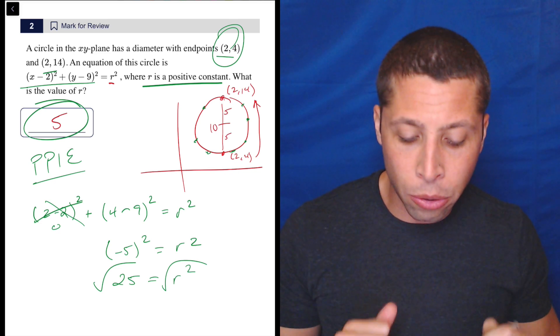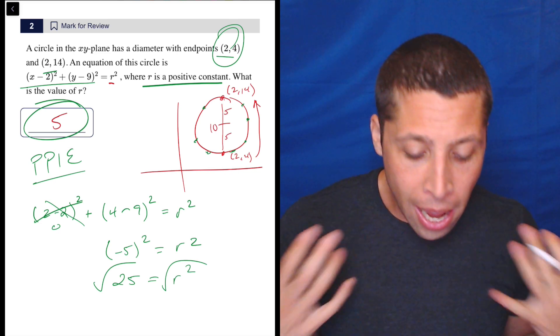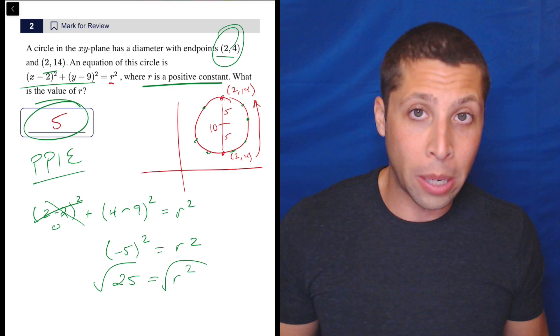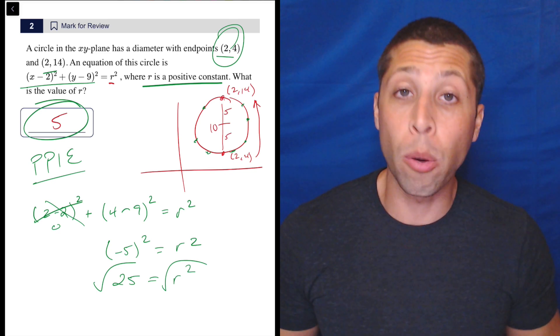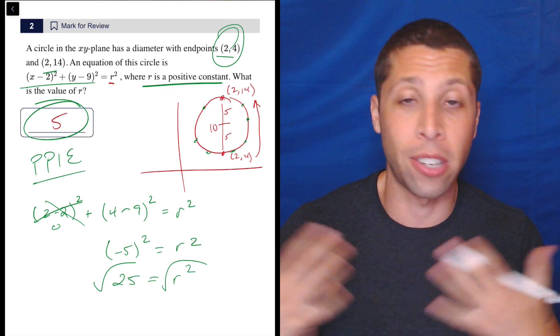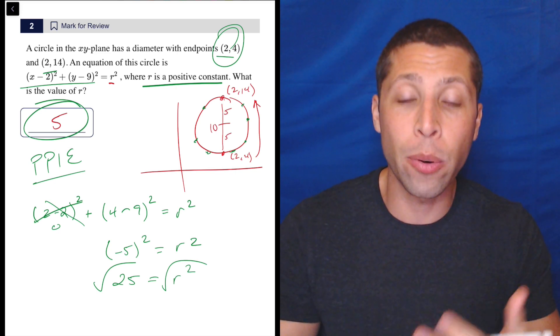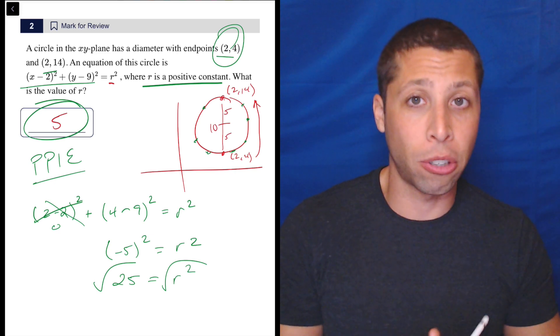So I would definitely do either of those. Honestly, I would probably have done the plug points into equations just because that's where my brain always is. I'm always looking out for points and equations. And if I have them, I just kind of go right into it. But I do think that drawing the picture is faster.